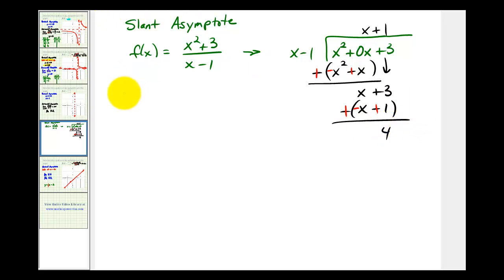So what we've discovered is that f of x is equal to x plus one, plus a remainder of four all over x minus one. Looking at this function, you'll notice as x approaches positive infinity, this quotient here is approaching zero, which means the function will be approaching the line y equals x plus one. So our slant asymptote is the line y equals x plus one. Let's go ahead and graph this on our coordinate plane.